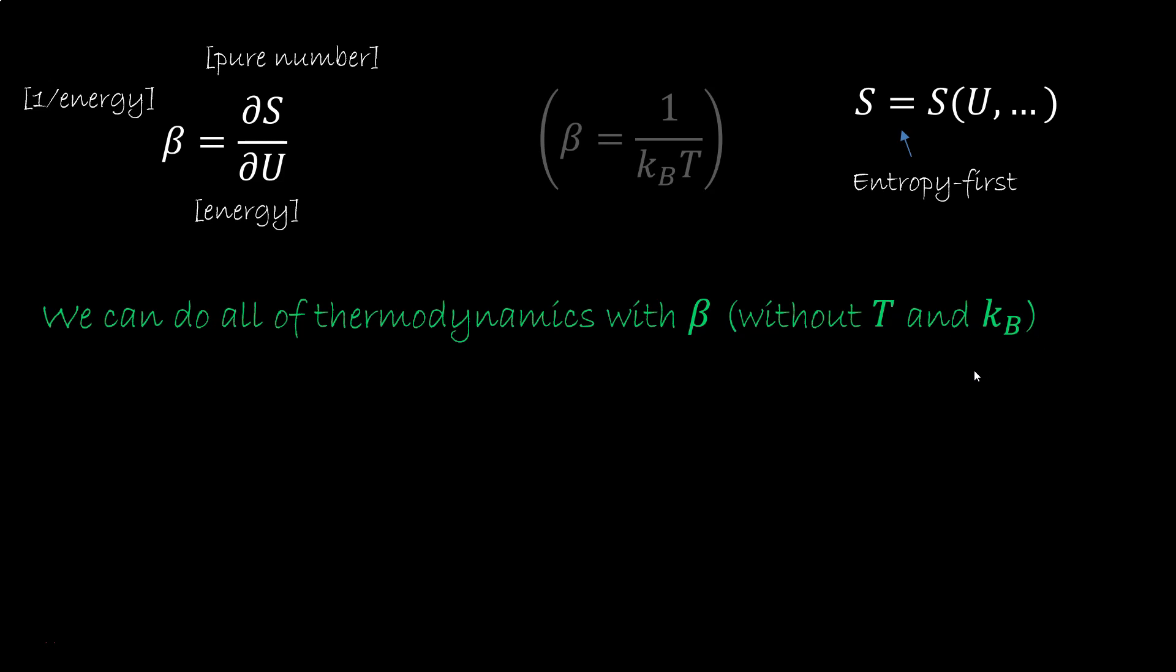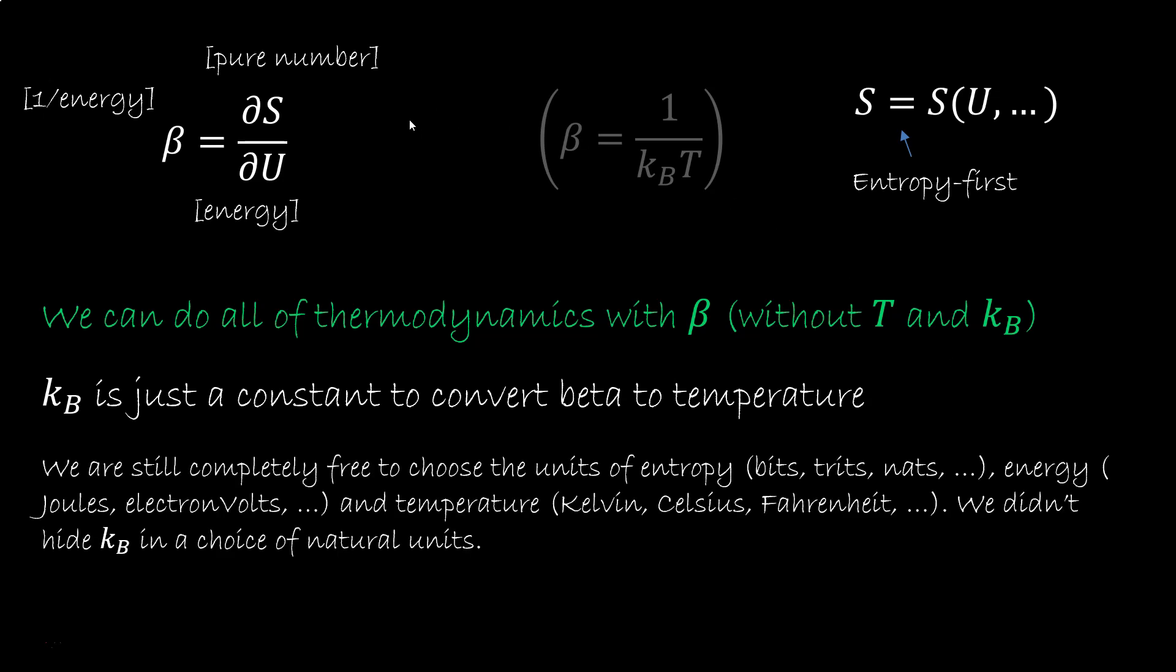In fact, you may have noticed how T in most thermodynamic expressions is paired with a Kb. Personally, I think there are many things that make the entropy first approach work much better conceptually, but that's a topic for another video. The point here is that the Kb is just a constant to convert beta to temperature. It does not set a physical scale like the speed of light. In fact, we are still completely free to choose the units of entropy, energy and temperature.